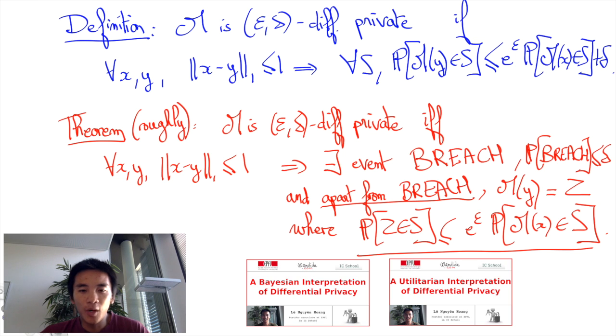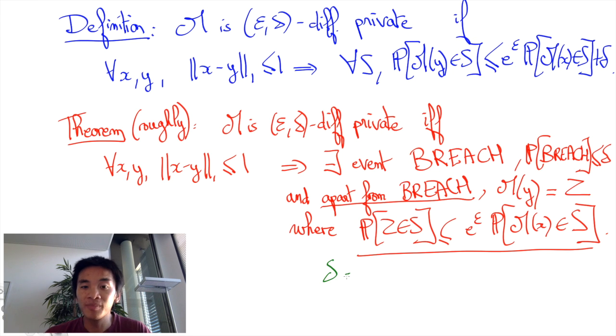Now we'll get back to a more precise statement of this result when we cover the Bayesian interpretation of differential privacy and the utilitarian interpretation of differential privacy.